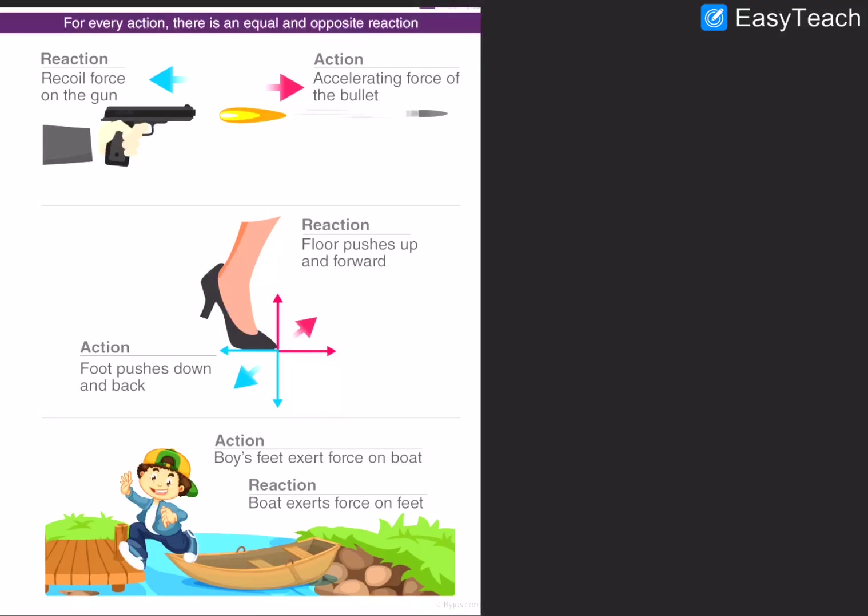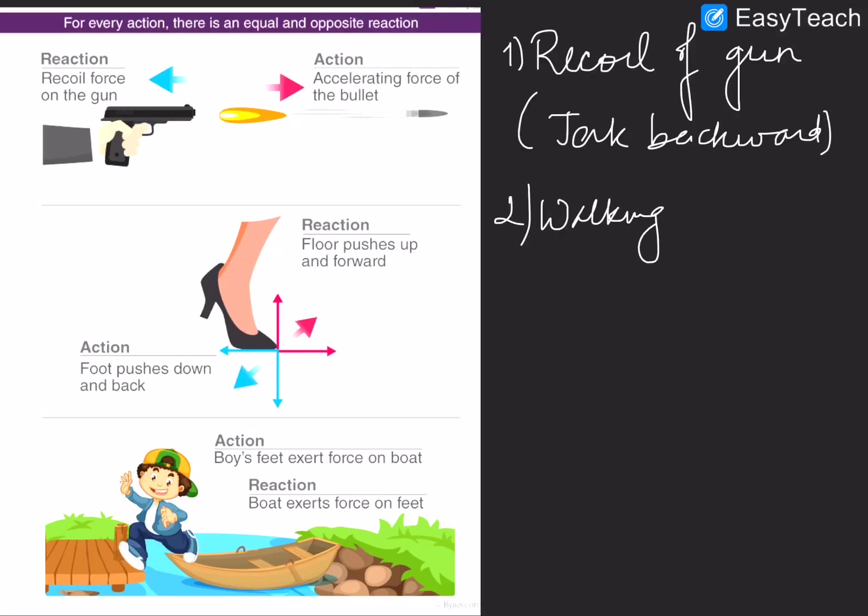First is, as you can see, recoiling of a gun. Whenever bullet is fired from the gun, we feel a jerk backward, which is known as recoiling of a gun. Walking on a floor is again an example of Newton's Third Law. Now, we apply action and in turn we get the reaction as seen in this diagram. Third is, when you exert some force on the boat to move forward, reaction is the force exerted backward on the boat. So we have so many examples from our daily life with the help of which you can understand Newton's Third Law.